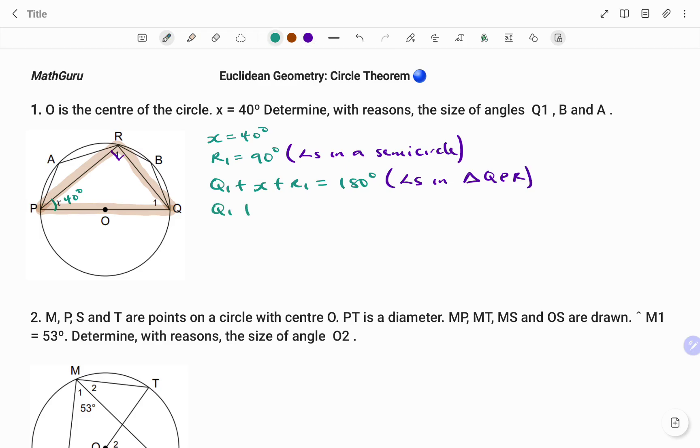Q1 plus x, x is 40 degrees, and then plus R1, R1 is 90 degrees equals 180. To solve for Q1, I have Q1 plus 130, that's 40 plus 90 equals 180. And moving 130 to the right-hand side, it will be 180 degrees minus 130 degrees. Therefore, Q1 is equal to 180 minus 130, 50 degrees.